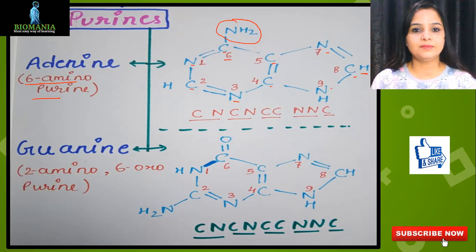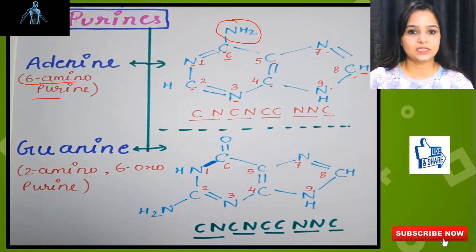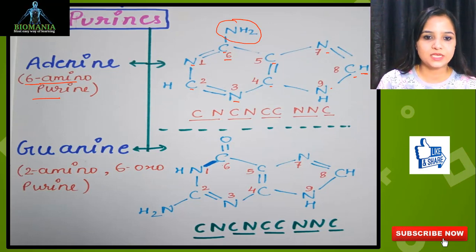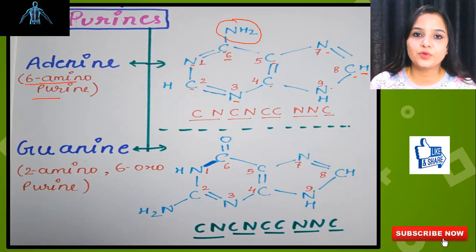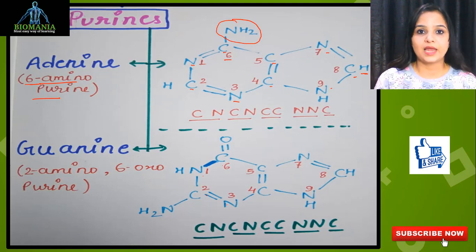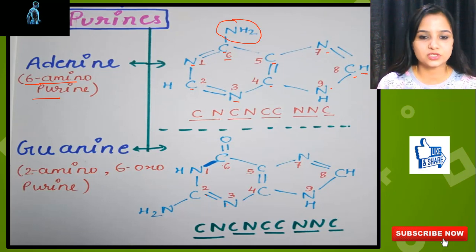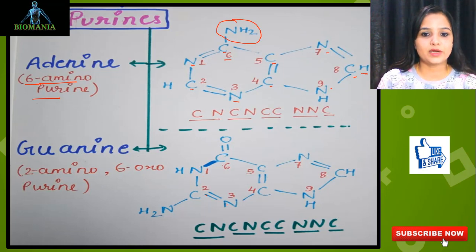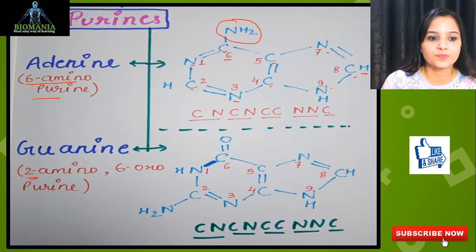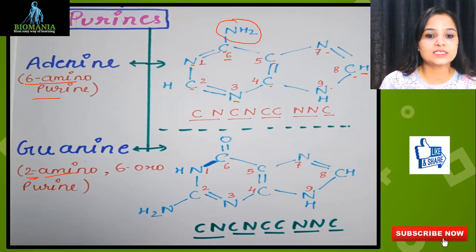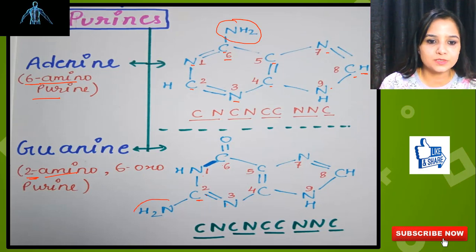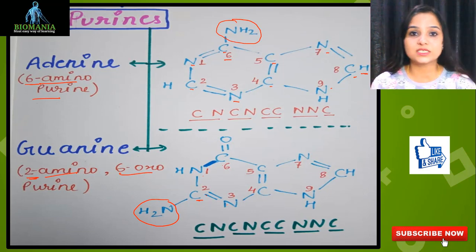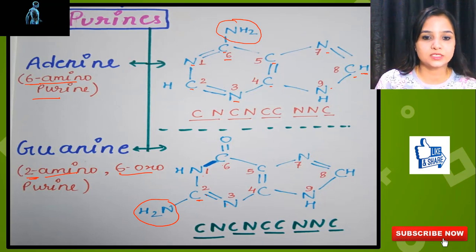The main frame is the same for adenine and guanine — both purines share the same C-N-C-N-C-C-N-N-C skeleton with a two-ring structure. For guanine, it is 2-amino-6-oxopurine: an amino group is present at the 2nd carbon, and oxygen is present at the 6th carbon. So we locate the 2nd carbon and place the amino group there, and the 6th carbon gets an oxygen attached by a double bond.